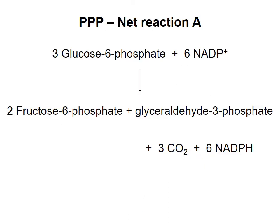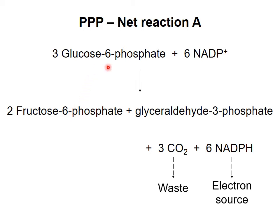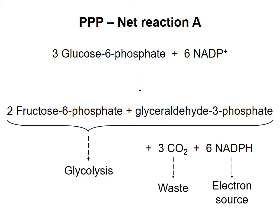The net reaction of this version of the pentose phosphate pathway is shown here. For every three glucose 6-phosphate molecules that enter the pathway, three carbons are oxidized to carbon dioxide, producing six NADPH molecules. The CO2 is a waste product and is exhaled. The NADPH molecules are a source of electrons for reduction reactions in biosynthetic processes. The other 15 carbon atoms from the original three G6P molecules end up as either fructose 6-phosphate or glyceraldehyde 3-phosphate, which are intermediates in glycolysis. These molecules proceed through glycolysis to make pyruvate, NADH, and ATP.